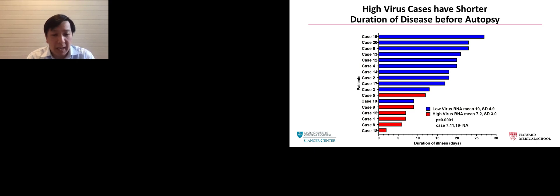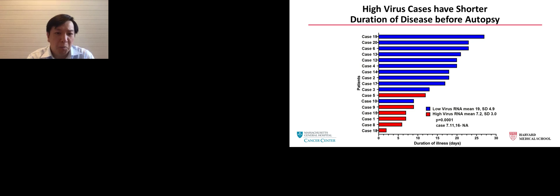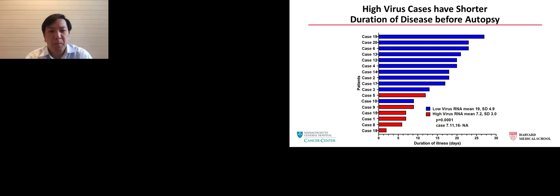To assess this, we asked whether there is a difference in time between the duration of disease before autopsy. The low virus samples had a longer duration of illness before succumbing to the disease, while our high virus cases typically were patients who succumbed from a rapid decline in pulmonary status. This indicated that there's probably a disease spectrum representing the temporal development and evolution of the disease in our patient population.